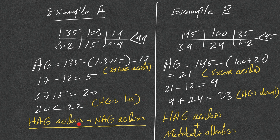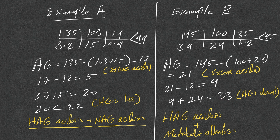Example B: anion gap = 21 — excess acids. 21 minus 12 = 9; 9 plus bicarb of 24 = 33. Since 33 is above 26, there is bicarb absorption. This patient has high anion gap metabolic acidosis and metabolic alkalosis.